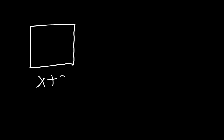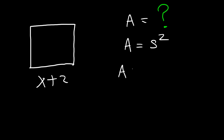Let's say you have a square and the side length is x plus 2. What is the area of this particular square? Go ahead and think about it — feel free to pause the video. Just like before, the area of the square is length times width, or side squared, and the side length is x plus 2.